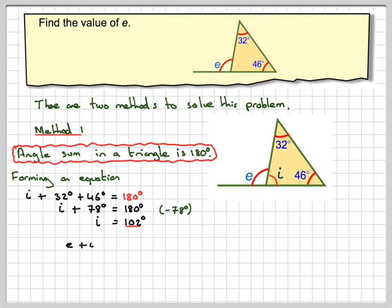E we can find very easily, because we know that E plus I is equal to 180. This is angles on a straight line, and therefore E plus 102, because I is 102, is equal to 180. Subtracting 102 from both sides, we get that E is equal to 78 degrees.